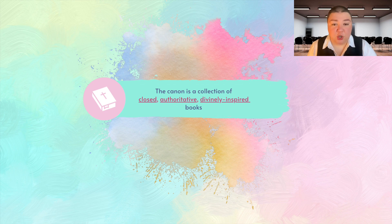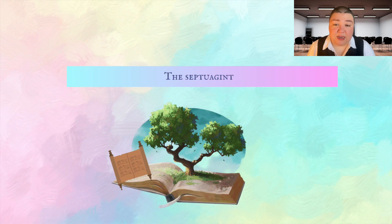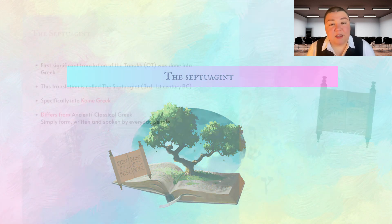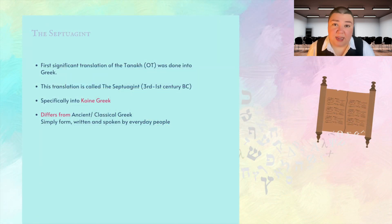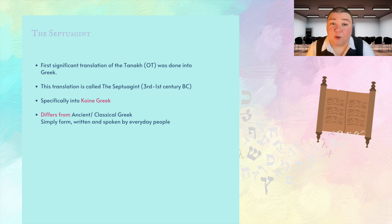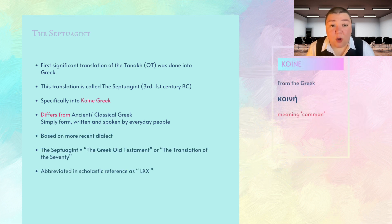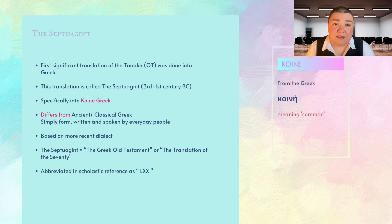The Jewish Bible was made up of three groups, written in Hebrew, and called the Tanakh. The first significant translation of the Tanakh, or the Old Testament, was done into Greek. This translation is called the Septuagint, estimated to have been written in the 3rd through 1st century BC. The Septuagint was written specifically in Koine Greek — Koine differed from ancient or classical Greek in that it was a simpler form, written and spoken by everyday people. Koine simply means 'common' in Greek. The Septuagint is sometimes referred to as the Greek Old Testament, or the Translation of the Seventy, and is often abbreviated in scholastic reference as LXX.